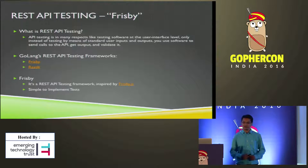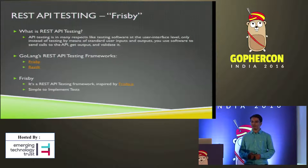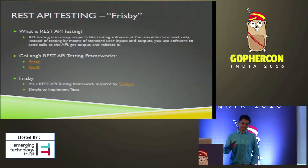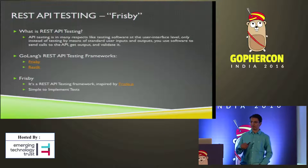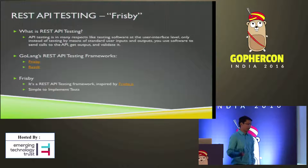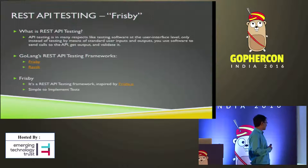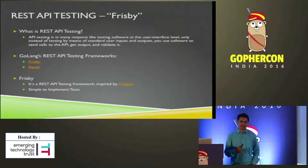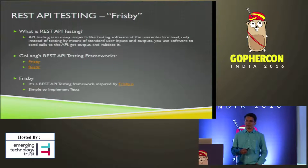The third type is REST API testing. REST API testing means testing our application without using the user interface — one program sends a request to another server or program and verifies that the output received is as expected. Golang has its own REST API testing frameworks, which are Frisbee and Restit. Frisbee is inspired by the JavaScript REST API testing framework frisbee.js, and it's very simple to implement REST API tests using Frisbee.